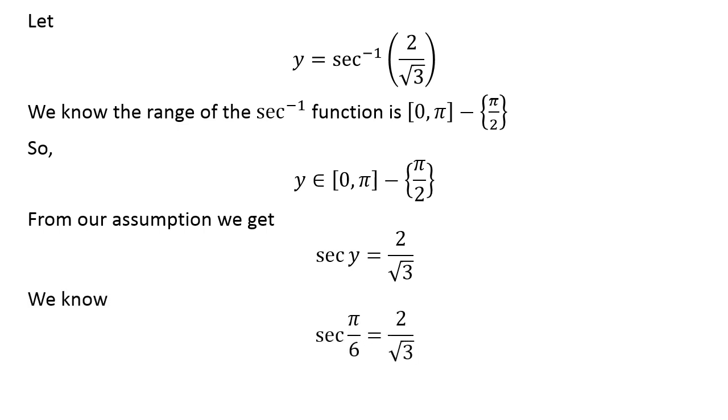We know secant of pi upon 6 is equal to 2 upon square root of 3.